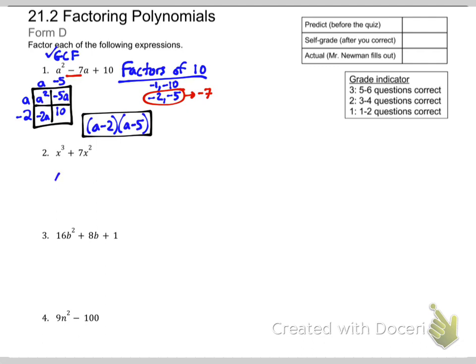All right, number 2, GCF. Well, the GCF is x². And once you do that, you notice we're down to a binomial. It's not a difference of squares. So we are done.